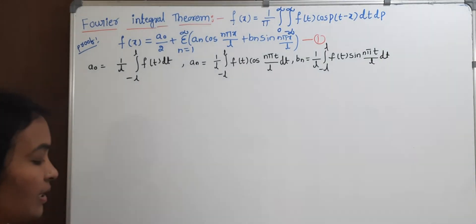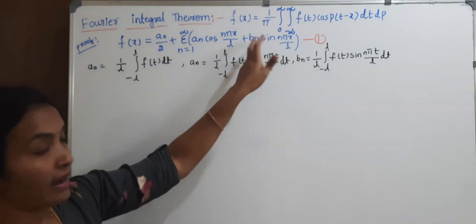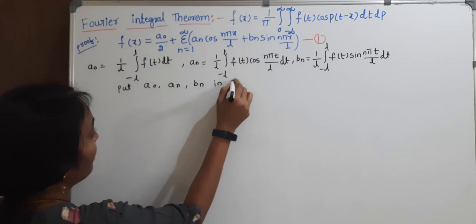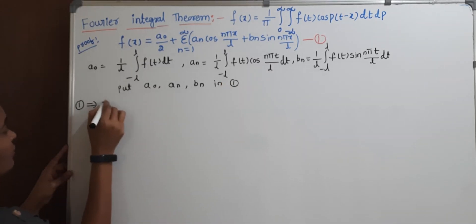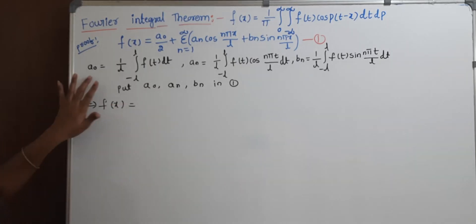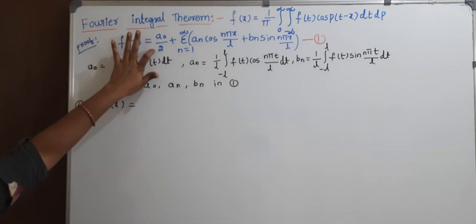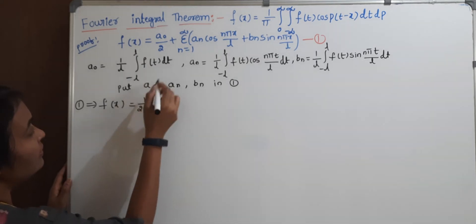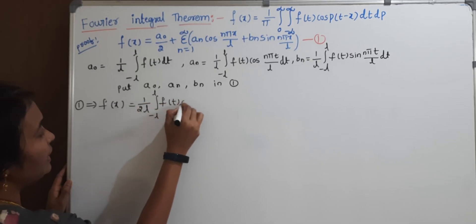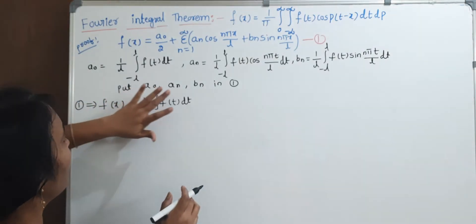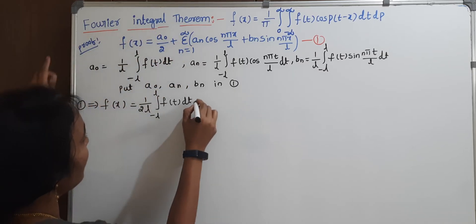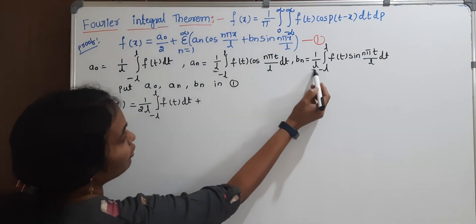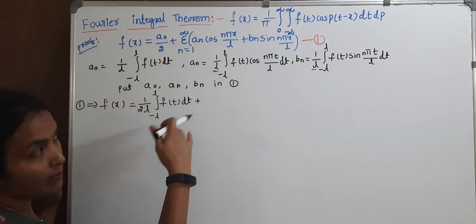I am substituting a₀, aₙ, bₙ values into equation 1. Putting a₀, aₙ, bₙ in equation 1, the first equation converts: f(x) equals a₀ replaced with 1 by l, giving 1 by 2l times the integral from minus l to l of f(t) dt. For the aₙ and bₙ terms — both have 1 by l and the integral is also the same — taking summation and 1 by l common.